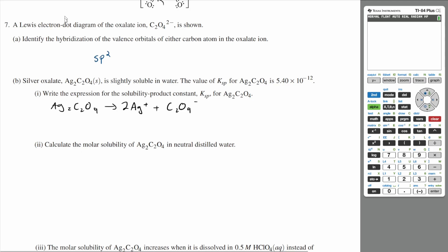So if you were to write the KSP, KSP would be [Ag+]^2 times [C2O4^2-]. Your stoichiometric coefficient just becomes your power. And since the coefficient is one, you would just have a power of one on the oxalate. So this would be your KSP.